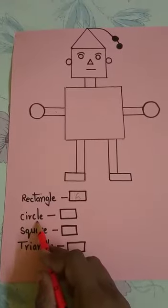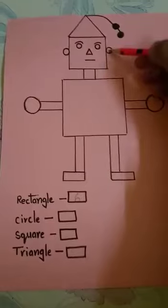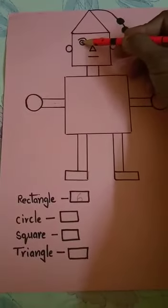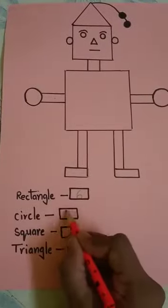Second is circle. So count the circles. 1, 2, 3, 4, 5, 6, 7, 8. Okay children?